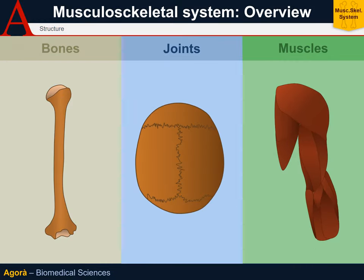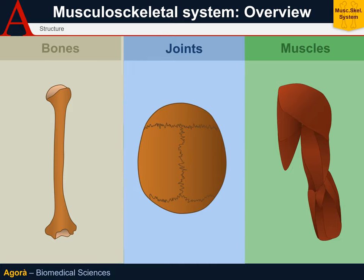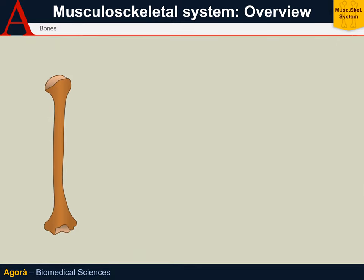First of all, bones can be divided into three broad categories depending on their shape: long, short, and flat.